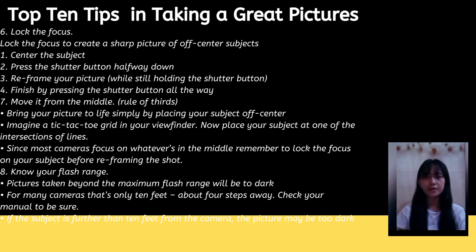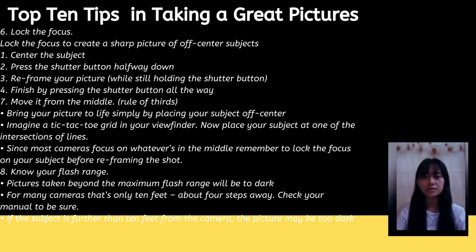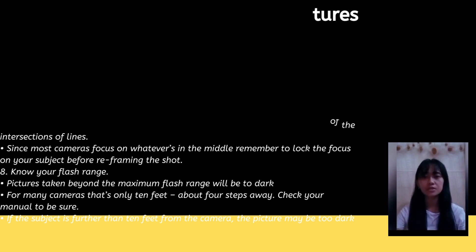Tip 8: Know your flash range. Pictures taken beyond the maximum flash range will be too dark. For many cameras, that's only 10 feet — about four steps away. Check your manual to be sure. If the subject is further than 10 feet from the camera, the picture may be too dark.